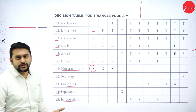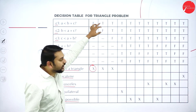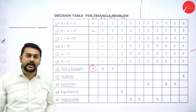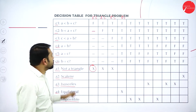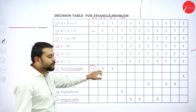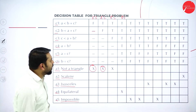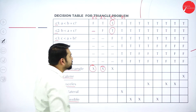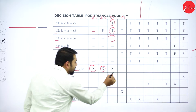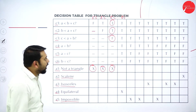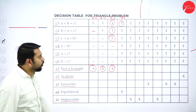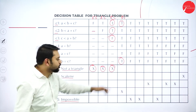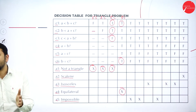How do we read this table? If condition C1 is false, I directly go to the action step — the output is not a triangle. A dash represents a don't-care condition, which you can ignore. For rule two: if C1 is true and C2 is false, the output is not a triangle. For rule three: C1 true, C2 true, but C3 is false — output is still not a triangle. For rule four: all conditions C1 through C6 are true — the output is equilateral triangle.